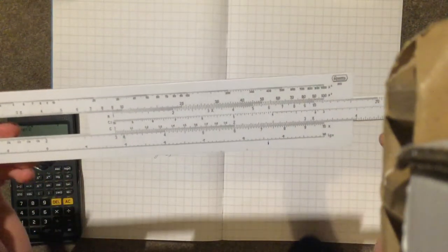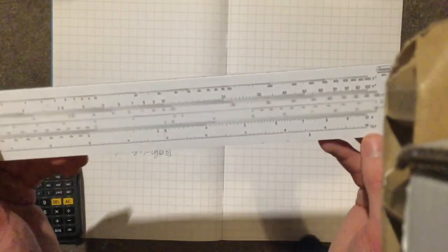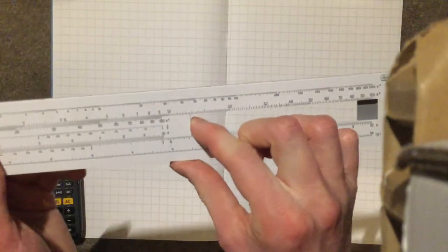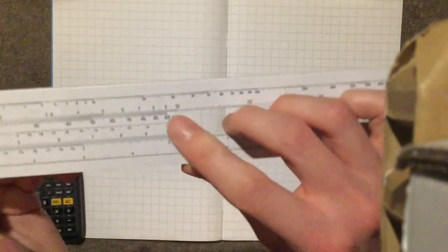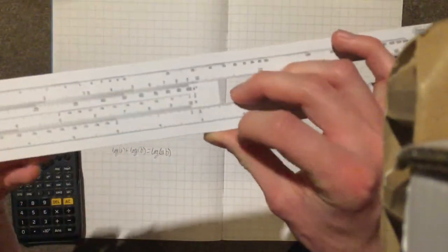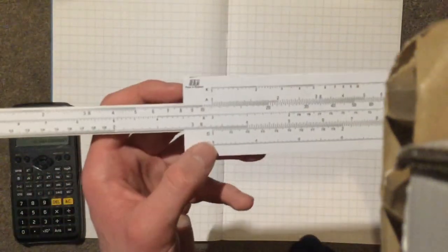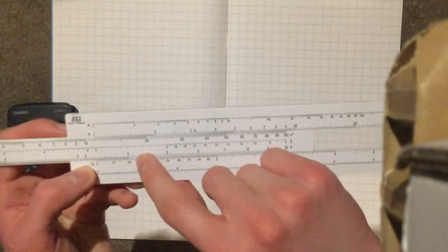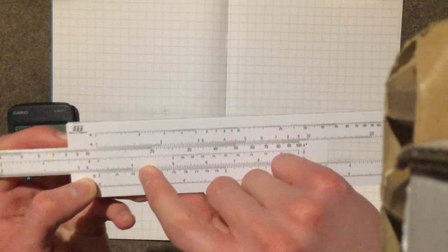What you have to do is slide the 10, the 10 on the C scale, over to the 3 on the D scale. So 3 times 4, along to the 4, is 12.